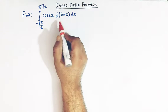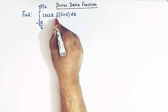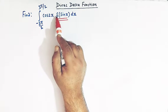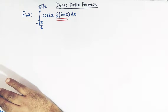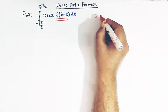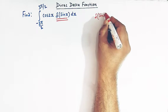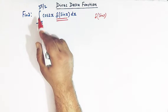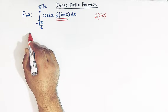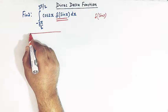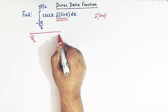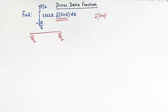We have delta of sine x. We'll first simplify this Dirac delta function by using a property of Dirac delta function. Let us first consider this quantity, that is delta of sine x. And remember here we have the limits of integration from minus 3 pi by 2 to 3 pi by 2.